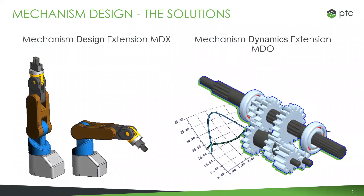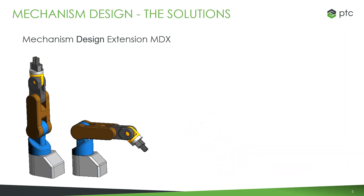There are two solutions I'm going to cover today. First is the Mechanism Design capabilities standard within Creo Parametric — your tools right in Creo for simulating your mechanisms, looking at ranges of motion, checking for interference, and integrating those capabilities into your assemblies. Then we'll look at the Mechanism Dynamics option, MDO — an extension that gives you extended capabilities to design and test mechanisms. With MDO we look at forces and accelerations created by moving components, taking into account springs, motors, friction, and gravity.